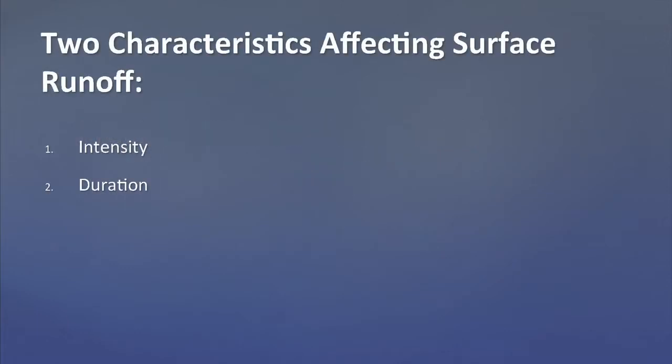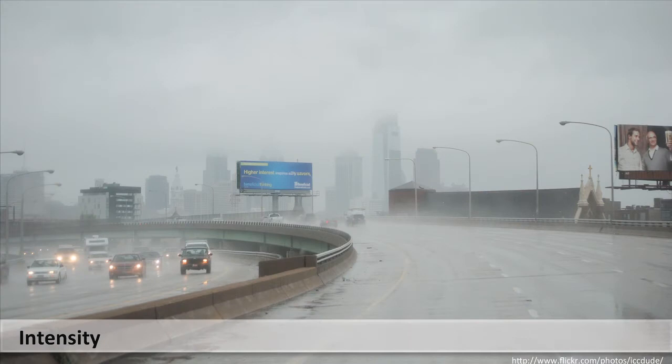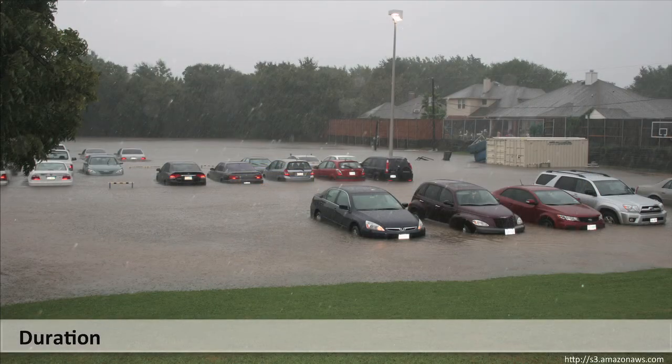The two characteristics of precipitation events that have the greatest effect on surface runoff are the intensity and duration of the rainfall. The total precipitation volume of a storm is measured by the average intensity of the storm, as measured in inches per hour, and the length of time of the storm event.